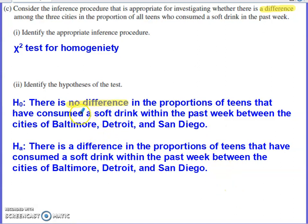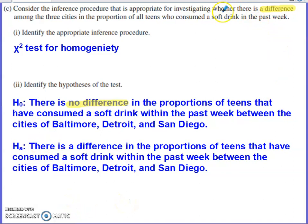The alternative hypothesis is the opposite: that there is a difference. You weren't actually asked to run the chi-square test here — just to identify that it's the correct test and recognize the null and alternative hypotheses. But if you were asked to run it, you'd be looking to reject the null and claim that yes, there is a difference among the three cities in the proportion of teens that have consumed a soft drink within the past week.